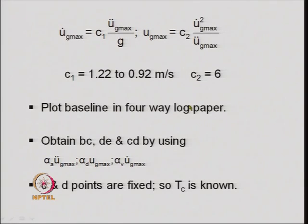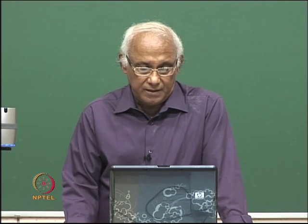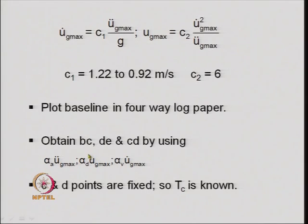The baseline plot shows peak ground acceleration, peak ground velocity, and peak ground displacement. Then we obtain the bc, cd segments using multipliers: the maximum ground acceleration multiplied by alpha_a, maximum ground displacement multiplied by alpha_d, and maximum ground velocity multiplied by alpha_v. These alpha_a, alpha_d, and alpha_v values are available for different soil conditions and also for design earthquake level and extreme earthquake level in various literature, and they are obtained from past earthquake records.